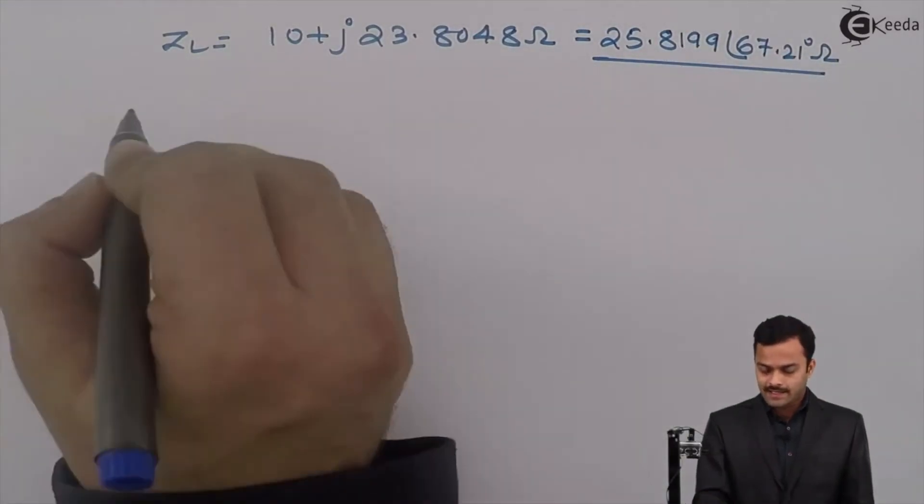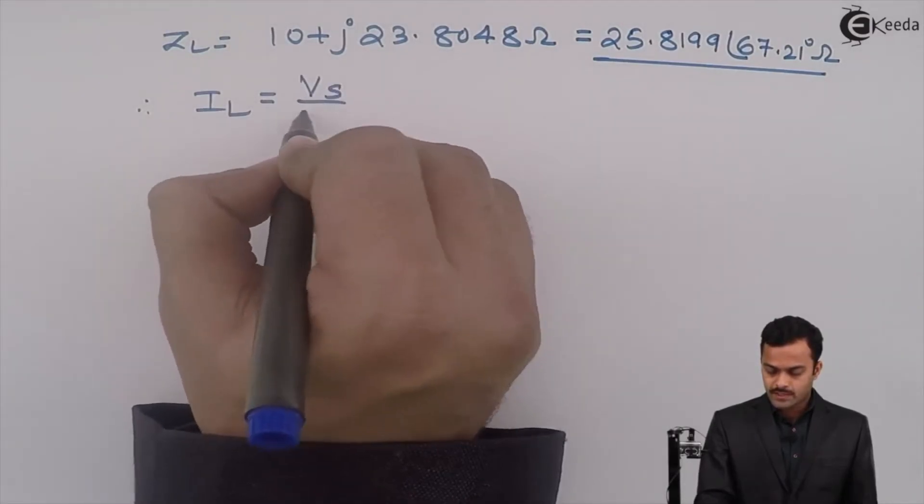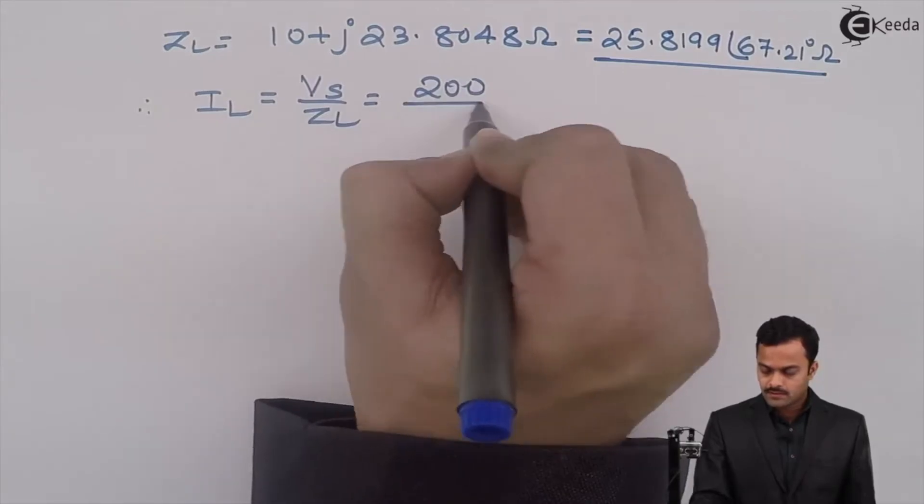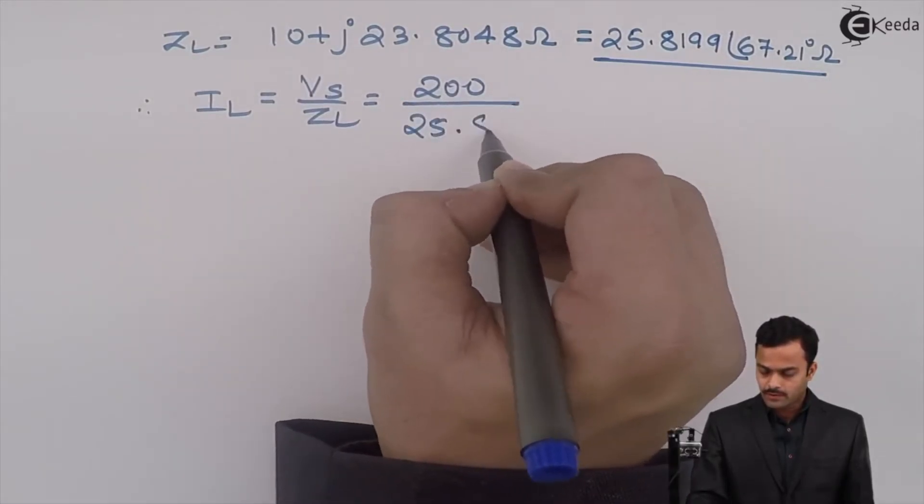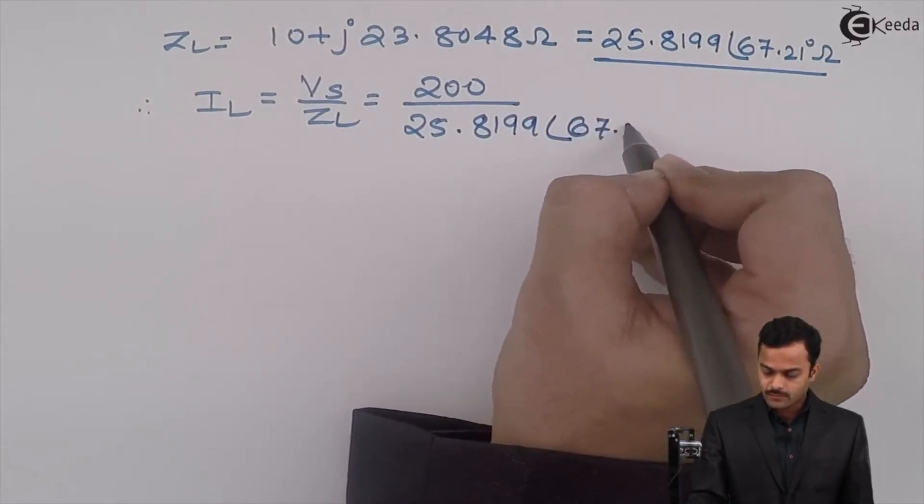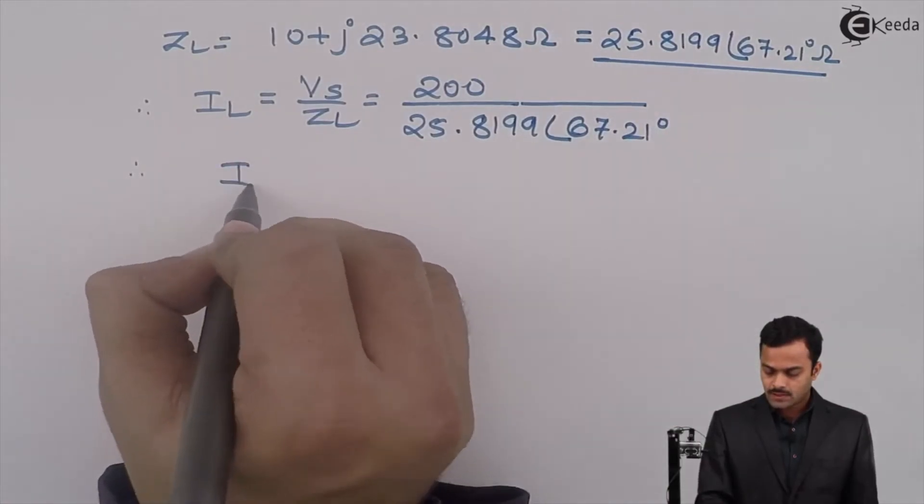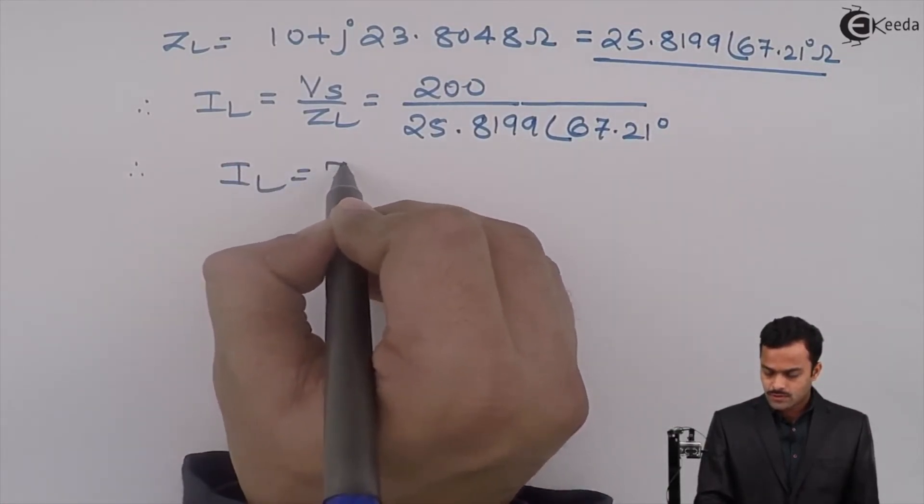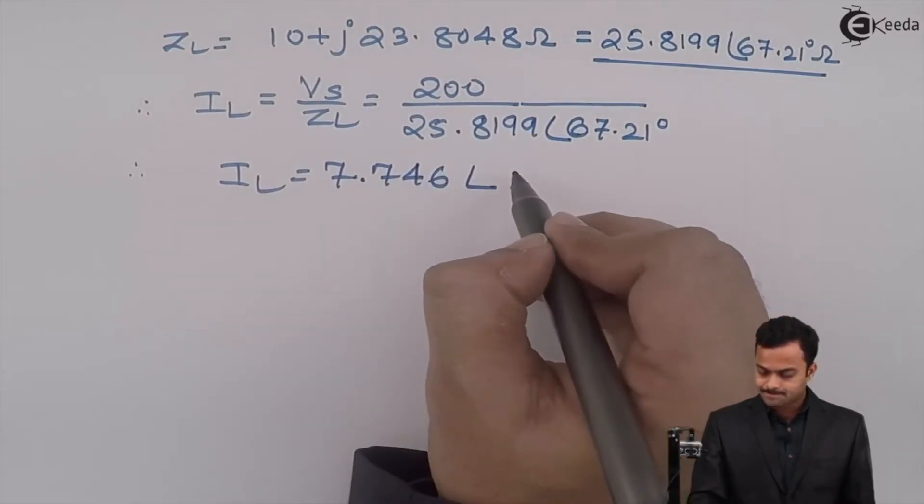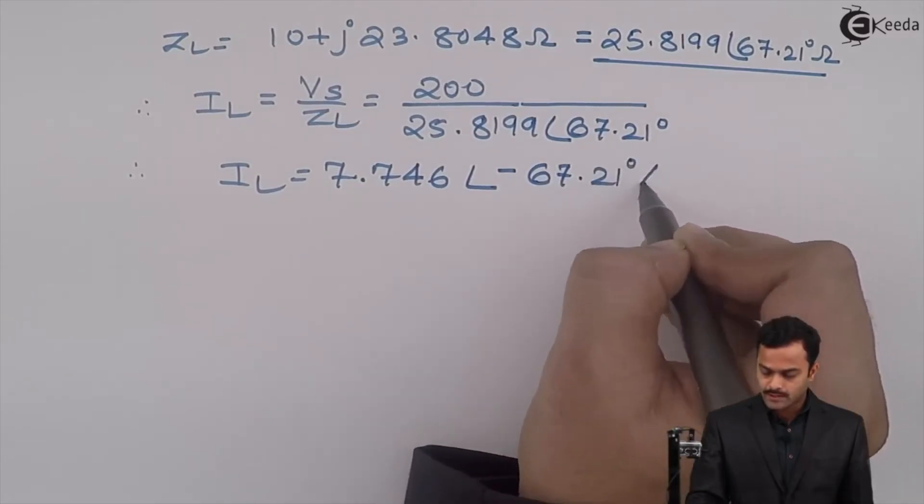Once I got ZL, I can get IL. So IL will be Vs divided by ZL equal to 200 divided by 25.8199 at an angle 67.21 degree, which will give me IL equal to 7.746 at an angle minus 67.21 degree ampere.